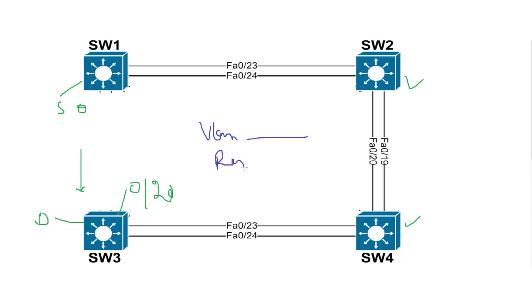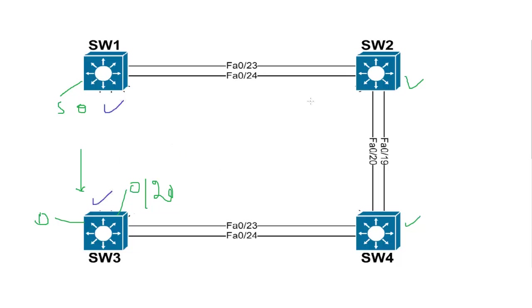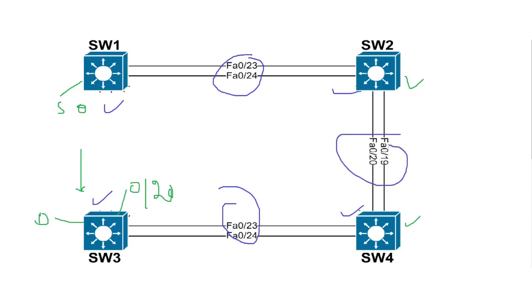You can define any VLAN number, but you have to make it a Remote SPAN VLAN — that is an R-SPAN VLAN. This is an additional parameter you need to attach to the VLAN, and it must be configured in all transit devices including source and destination switches. Also, this VLAN must be allowed on the trunks.